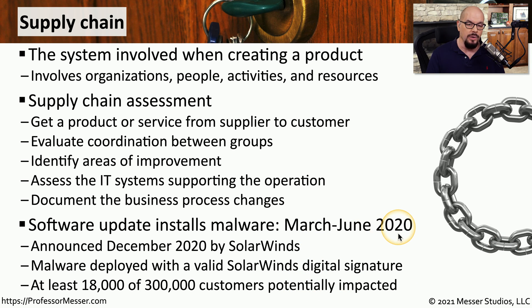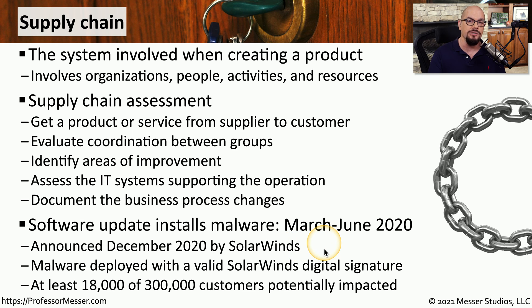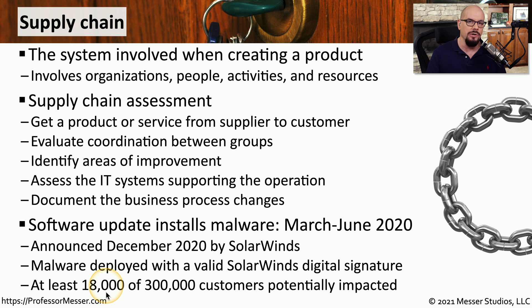Between March and June of 2020, a software update from a network management provider installed malware onto customer systems. We weren't made aware of this until December 2020 when SolarWinds announced the update could potentially install malware. Because the malware was installed onto SolarWinds' servers, it was put into the update and digitally signed with the SolarWinds certificate. Customers validated the digital signature and trusted the update. Of SolarWinds' 300,000 customers for this product, at least 18,000 companies were infected — a significant breach that gained access to thousands of networks by exploiting the supply chain.